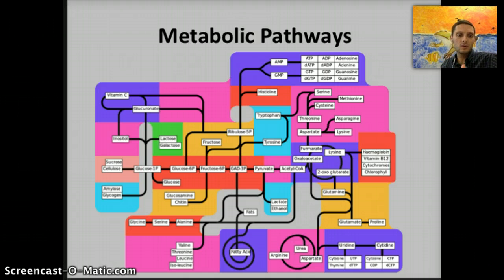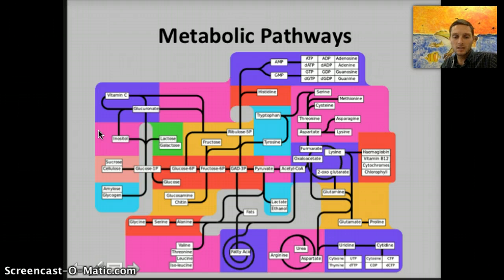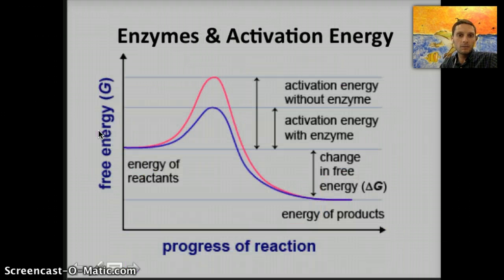Sometimes they're a chain and sometimes an actual continual cycle. This image shows the linking of different metabolic reactions. In my classroom, I have posters showing lots of different types of metabolic reactions, the products they produce, and how they're linked with one another. All of these metabolic pathways and reactions are made possible by enzymes.